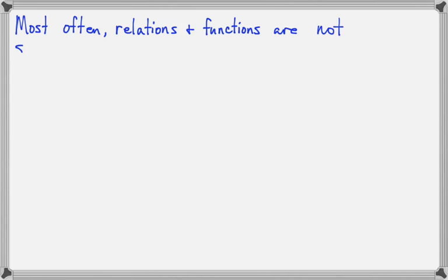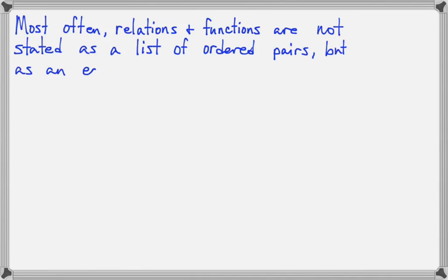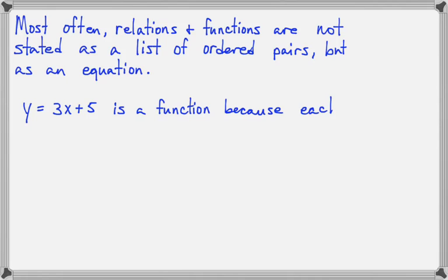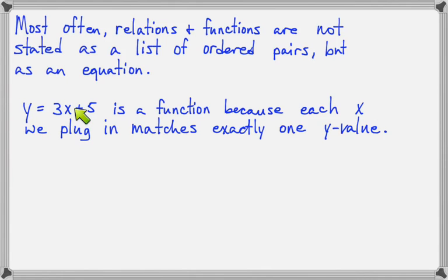So most often, functions and relations are not stated as a list of points like we've seen, but they're usually given as equations, such as this. y equals 3x plus 5 is a function, because if we plug in an x value, we'll multiply that x value times 3, we'll add 5 to it, that will give us one y value. So this is going to create a set of ordered pairs where every x generates one y.